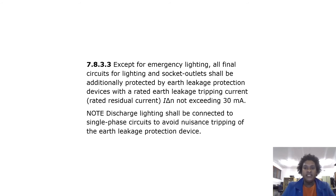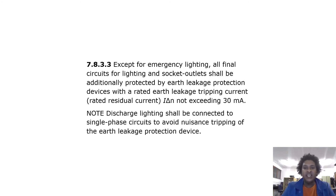Except for emergency lighting, all final circuits for lighting and socket outlets shall be additionally protected by earth leakage protection devices with a rated earth leakage tripping current not exceeding 30 milliamps. Note: discharge lighting shall be connected to single-phase circuits to avoid nuisance tripping of the earth leakage protection device.